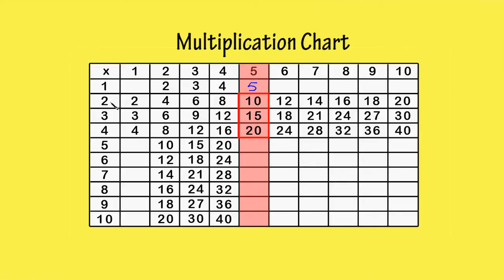5 times 2 is part of the 2 times table and 5 times table. 5 times 3 is part of the 3 times table and 5 times table. And 5 times 4 is part of the 4 times table and 5 times table.